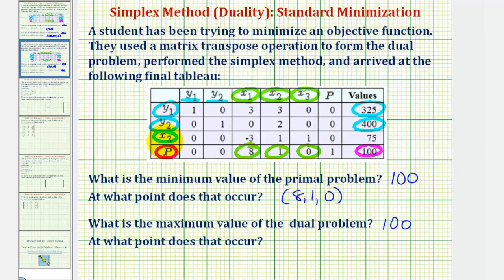but notice how the slack variable x sub 3 is active, and 1x sub 3, or x sub 3 equals 75. But again, the point we're looking for would be y sub 1, comma y sub 2, or the point 325, comma 400.